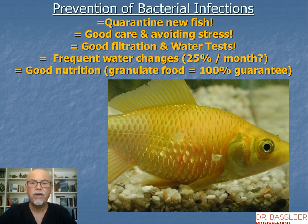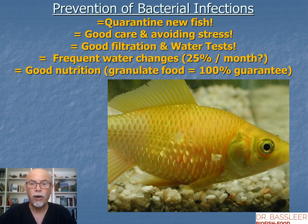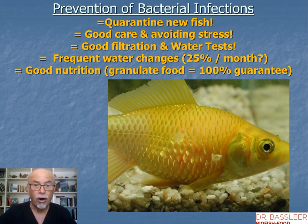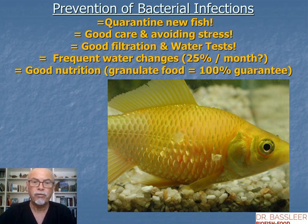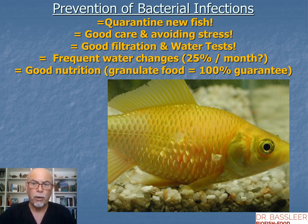We also recommend frequent water changes — approximately 25% each month. In my home aquarium, where I have a few fish and a lot of plants, I only do two to three water changes a year. Why? Because I have a large filter, I don't have a heavily stocked aquarium, less food, less fish, and a very large biological filter. These are things which can reduce the need for water changes.